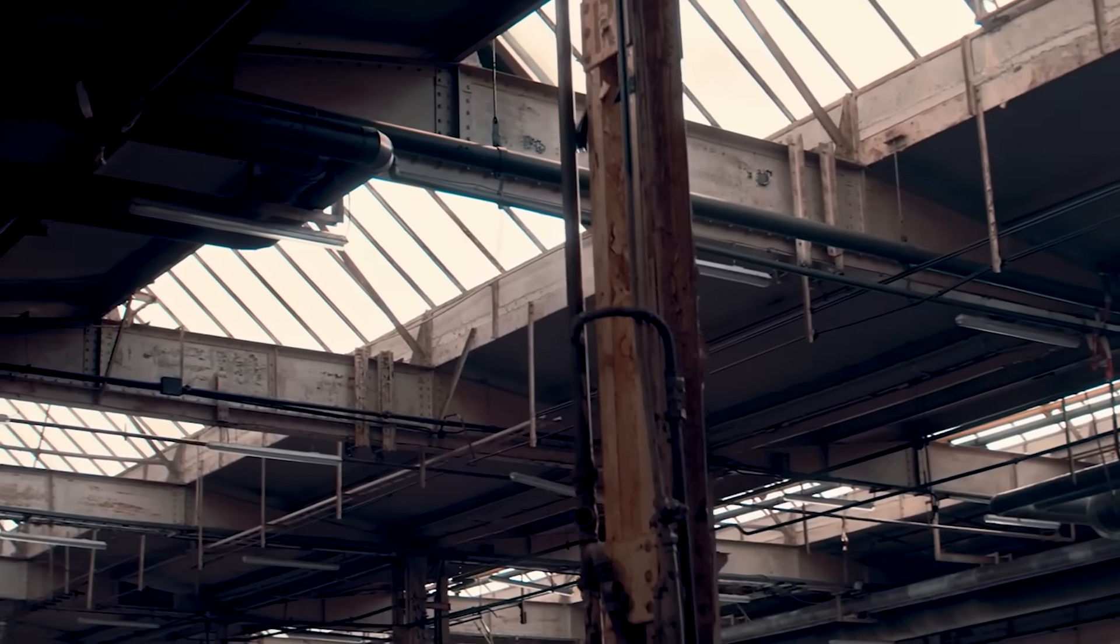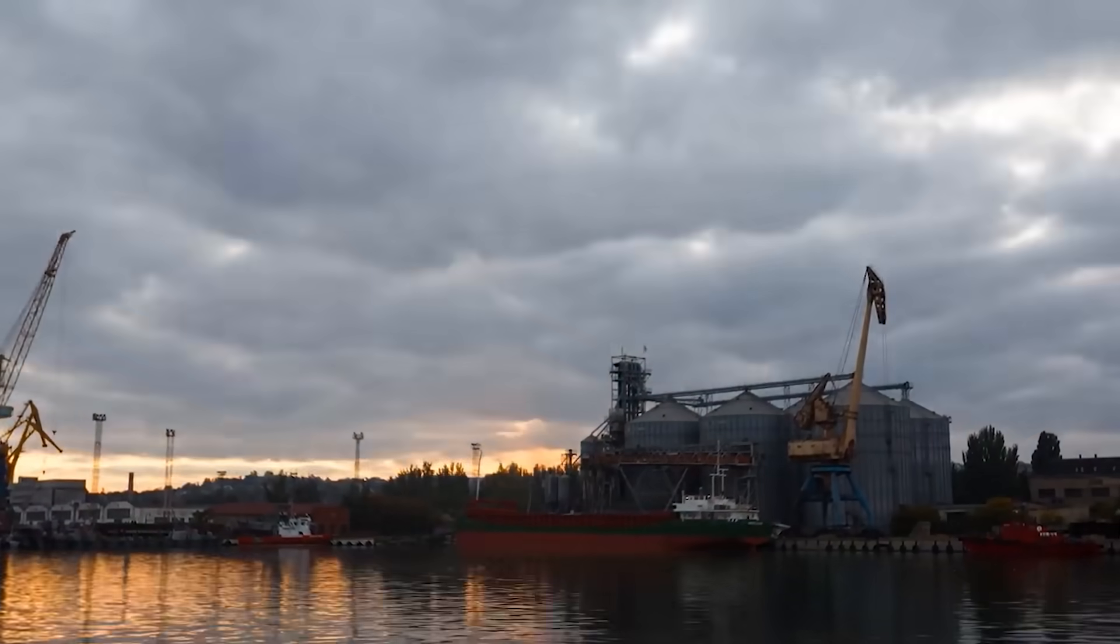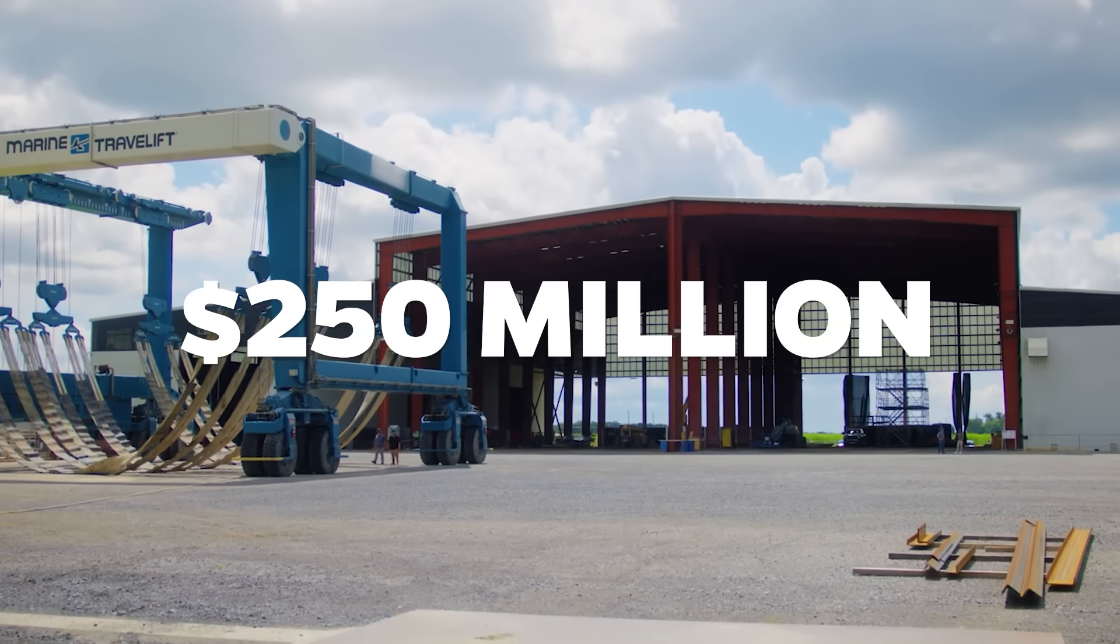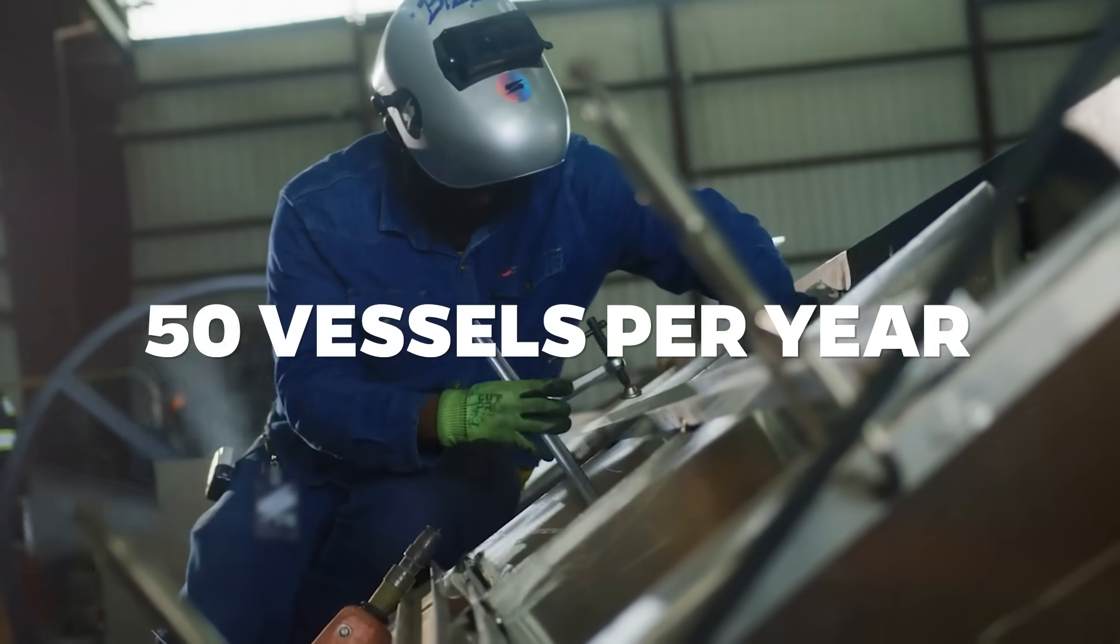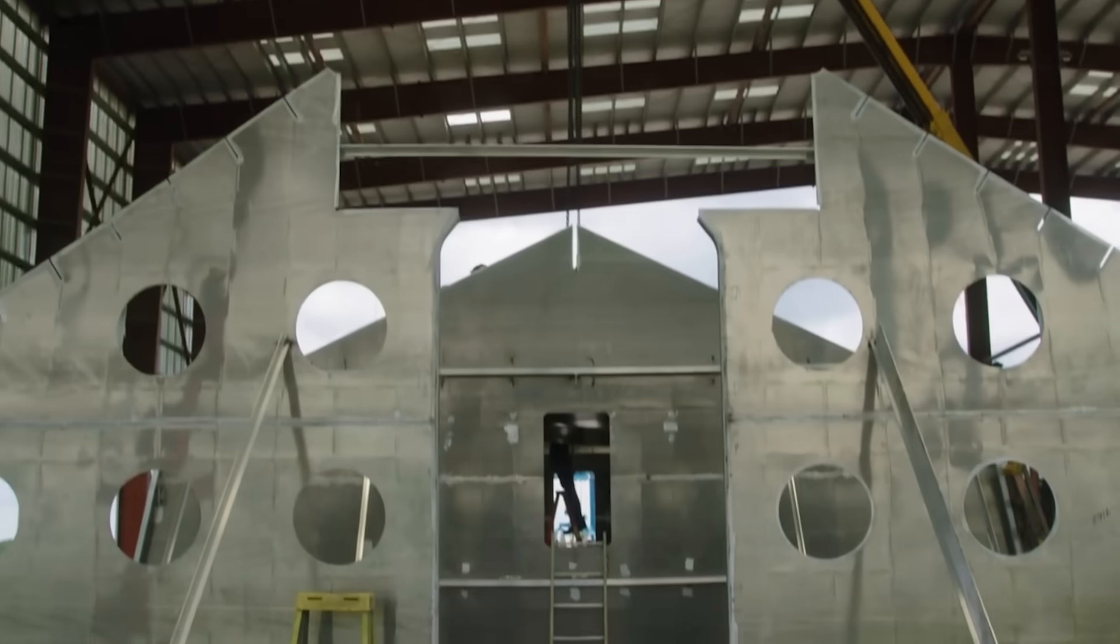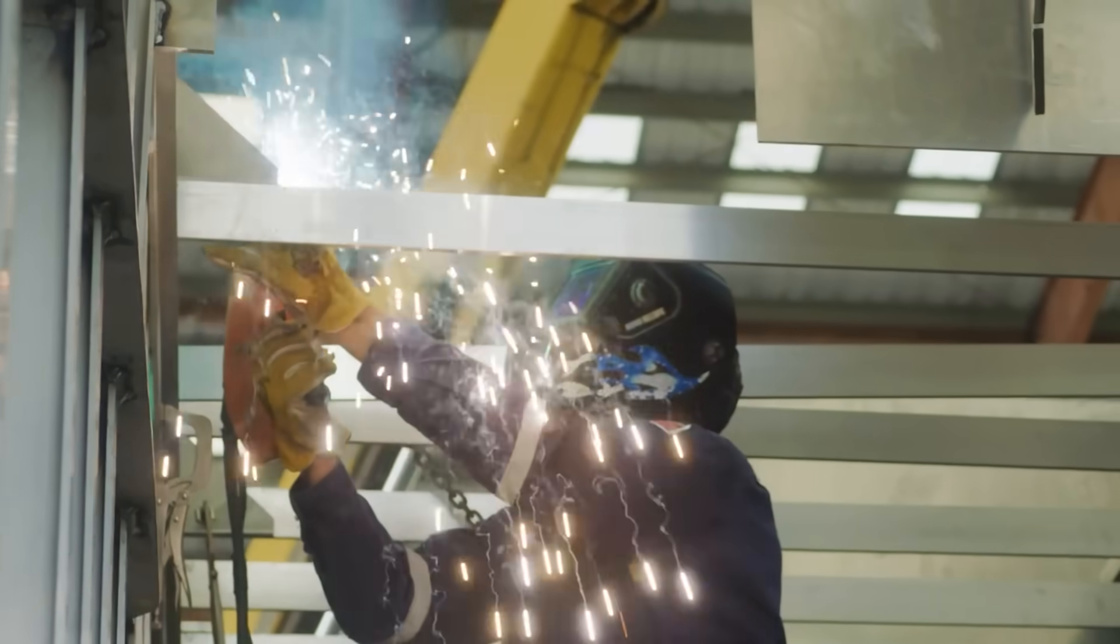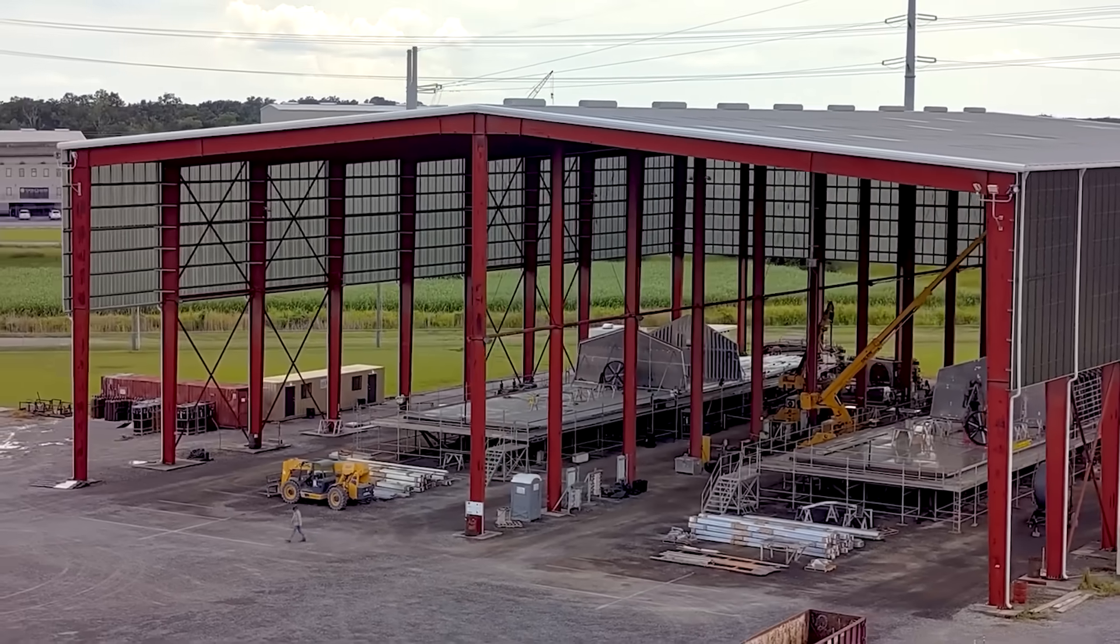The keel goes down in Franklin, Louisiana. Gulfcraft reborn as Saronic's Rapid MUSV line, backed by roughly $250 million in upgrades, aimed at turning out up to 50 autonomous vessels per year. That's how you turn a single heavy hauler into a fleet posture. One on station, one outbound, one inbound, and your logistics problem starts solving itself.